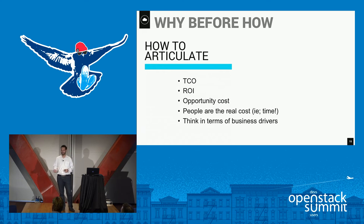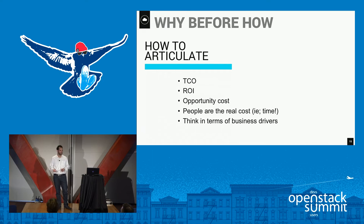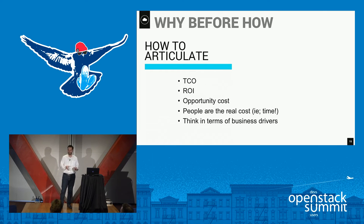How do we articulate this to the business? When talking to business executives and managers about why we want to do this cool new thing with OpenStack, we've got to talk about total cost of ownership and return on investment. Technology is an enabler of revenue within a business. It used to be viewed as a cost center, but increasingly companies are using technology to enable revenue. For every dollar invested — whether CapEx, OpEx, or people's time, which is often the biggest cost — it has to deliver a return to the business.